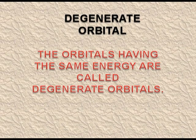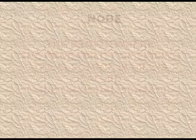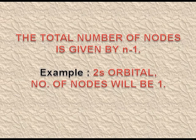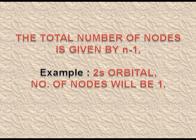The orbitals having the same energy are called degenerate orbitals. Nodes are regions where the chances of finding an electron are almost nil. Such regions are known as a node or nodal surface. The total number of nodes is given by n minus 1. For example, for the 2s orbital, the number of nodes will be 1.